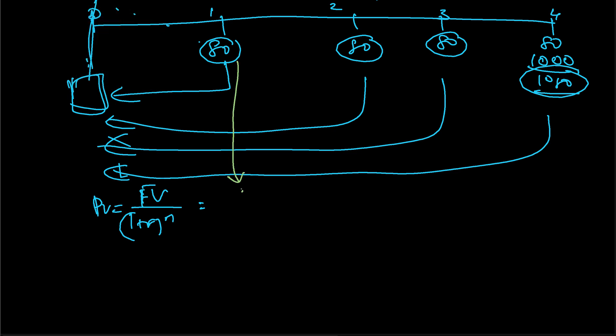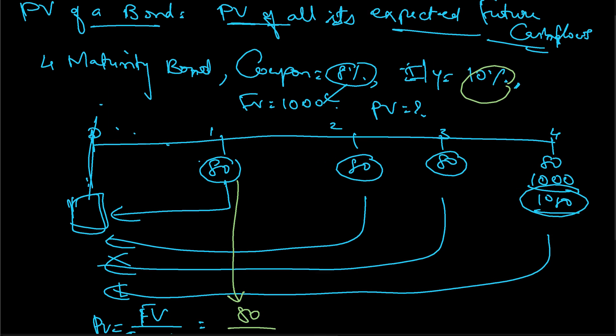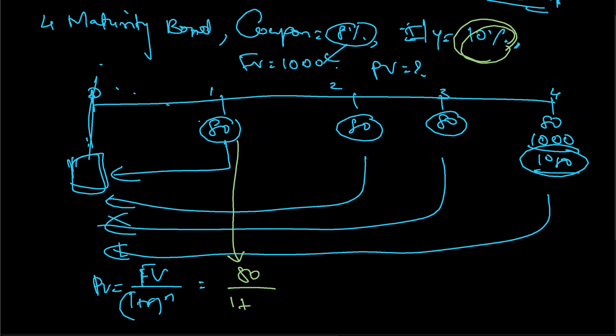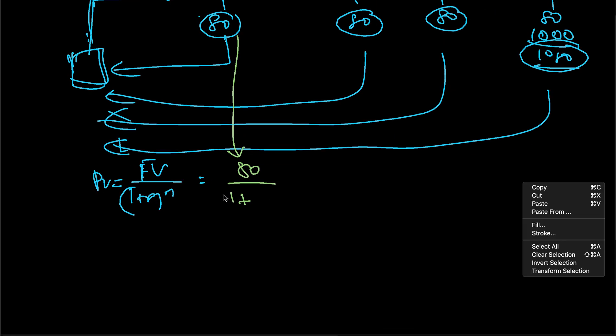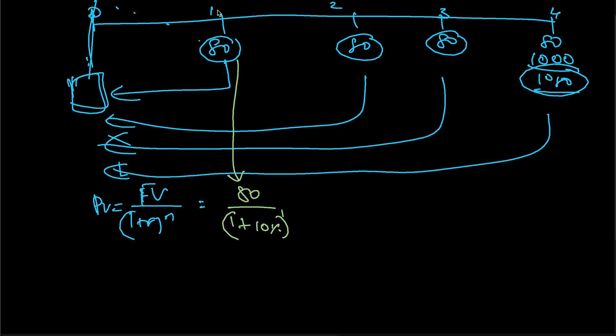This cash flow: 80 divided by (1 + r), where r refers to the interest rate 10%. So I take this YTM of 10%, to the power 1, because I am getting this at the end of the first period.